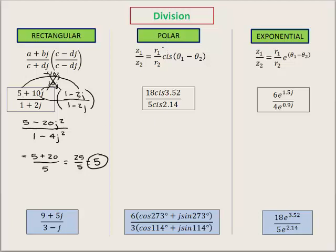Let's go on to polar. Remember, we divide the r's and subtract the thetas. So 18 divided by 5 gives 3.6 cis. This time the angle is specified in radians — it doesn't matter whether it's degrees or radians, you still subtract. So 3.52 minus the second angle should give us 1.38 radians. That is our answer for polar division of this problem.